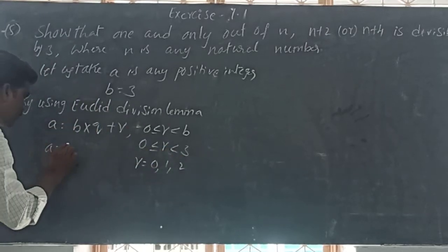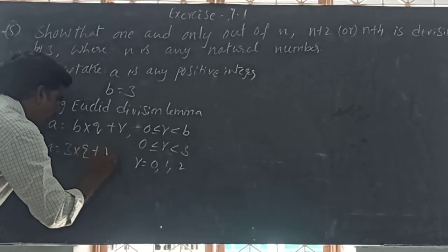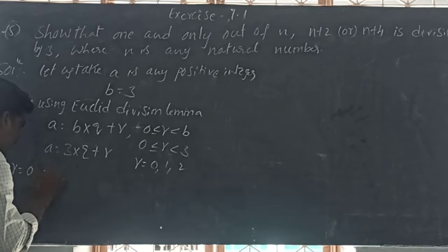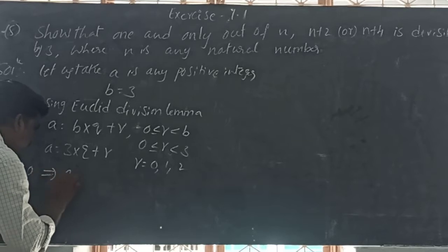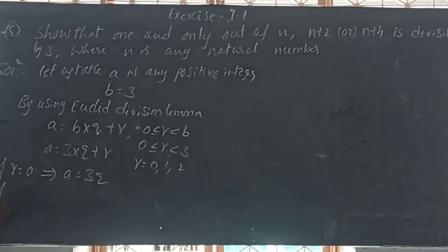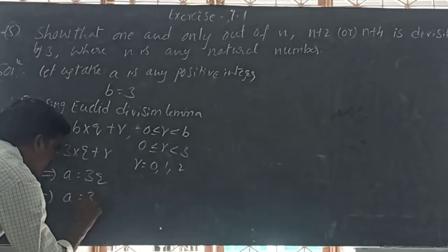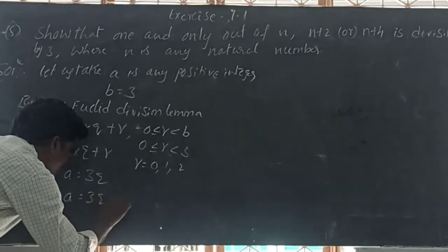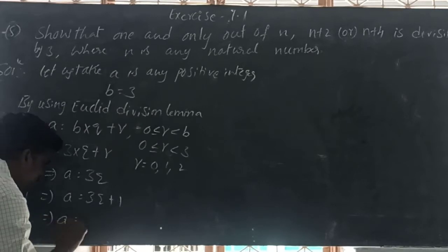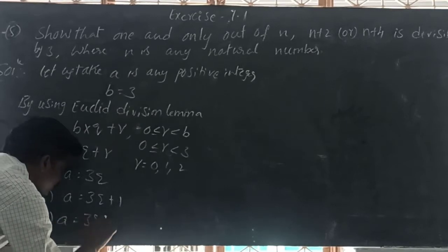A is equal to 3 into Q plus R. So if R is equal to 0, then A is equal to 3Q. If R is equal to 1, then A is equal to 3Q plus 1. If R is equal to 2, then A is equal to 3Q plus 2.